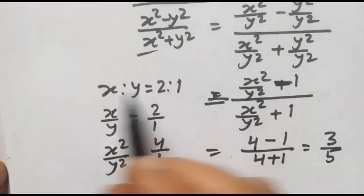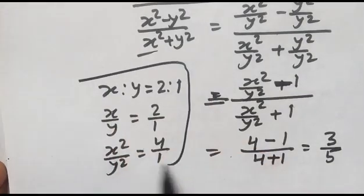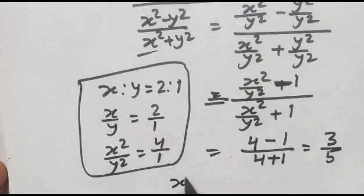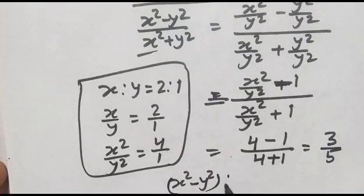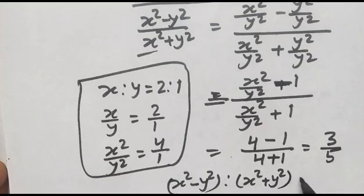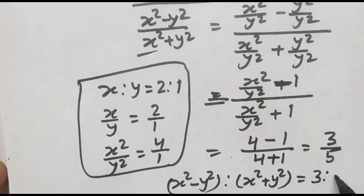So we get x squared minus y squared is to x squared plus y squared is equal to 3 is to 5. Okay friends, thank you.